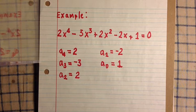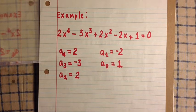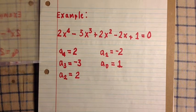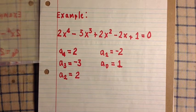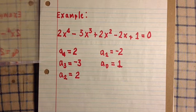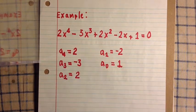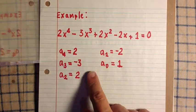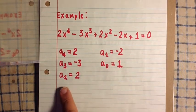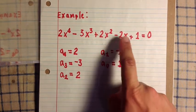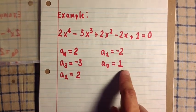Let's take an example. 2x to the fourth power minus 3x cubed plus 2x squared minus 2x plus 1 equals 0, and we need to find the four roots. First of all, let's label the coefficients here. A4 equals 2, A3 equals negative 3, A2 equals 2, A1 equals negative 2, and A0 equals 1.